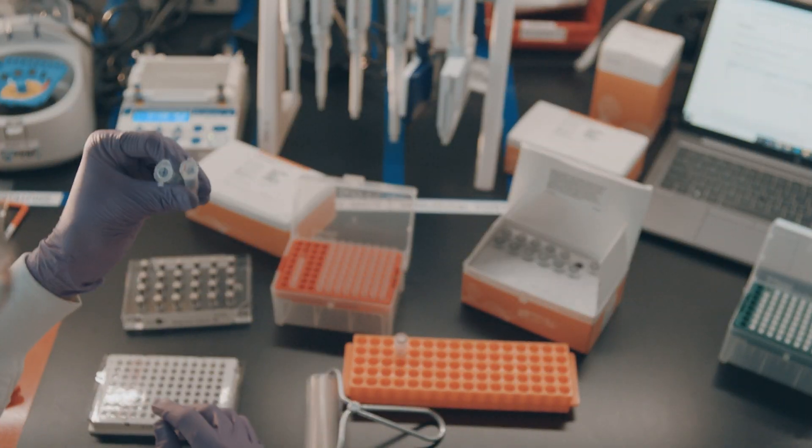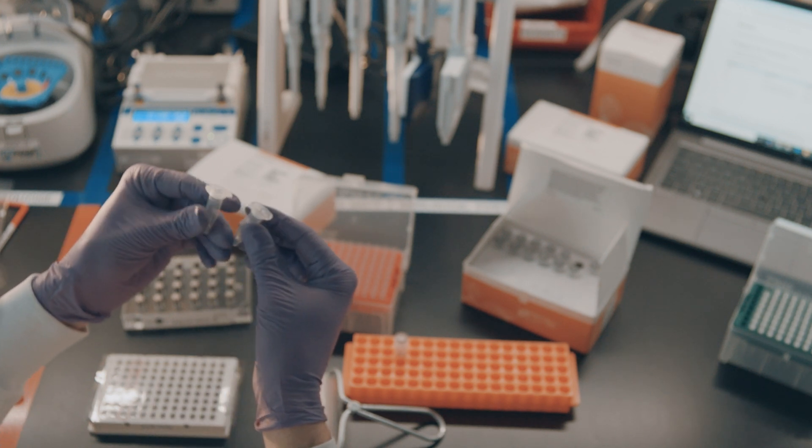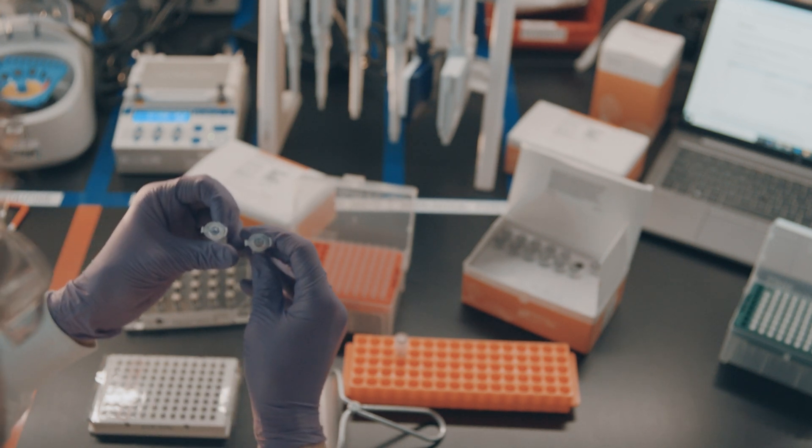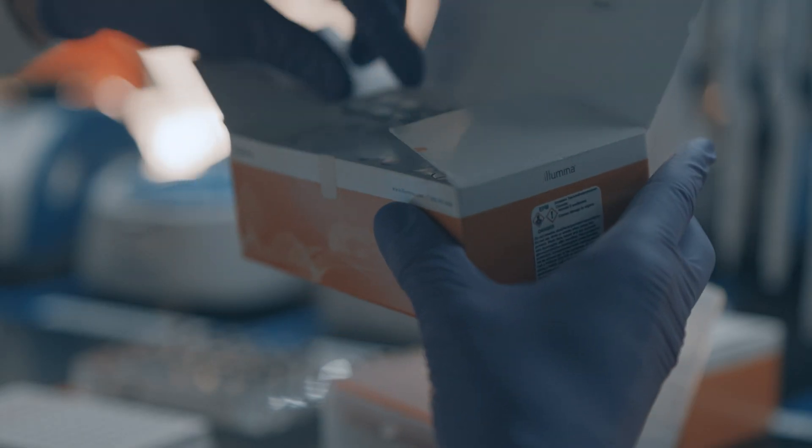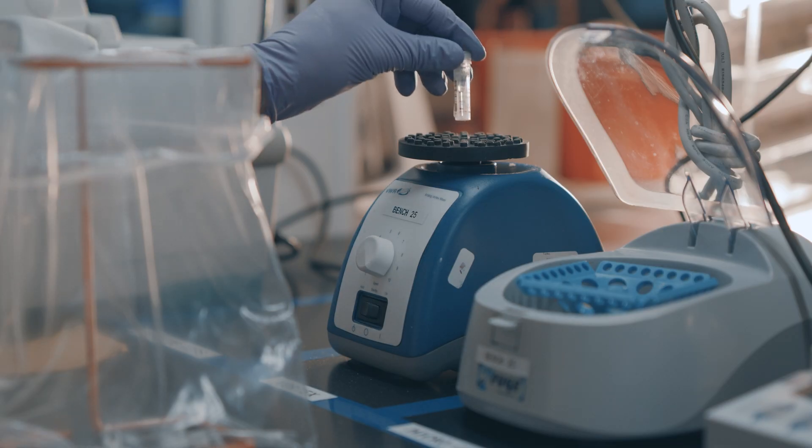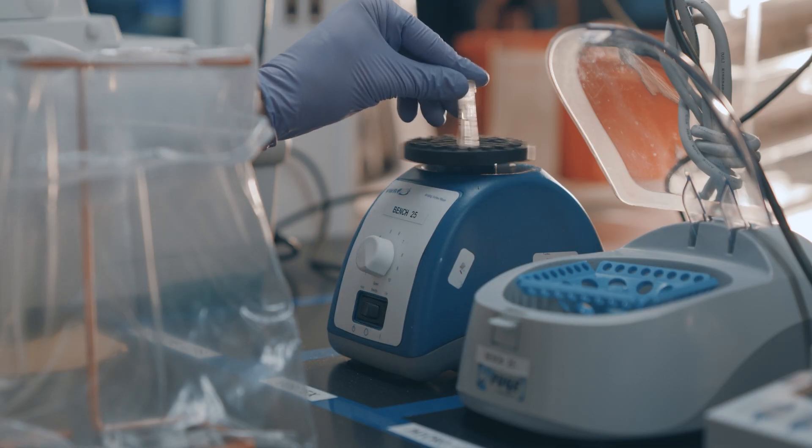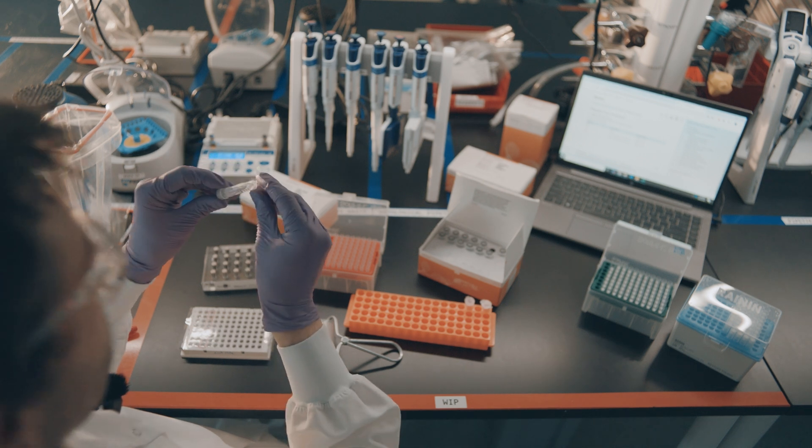Once first strand synthesis has been generated, primer pools are used in two separate amplicon PCR reactions to amplify the regions of interest. One tip the user should keep in mind is to make sure that the Illumina PCR mix or IPM is completely mixed and that no precipitate is visible. This may take several rounds of vortexing to achieve.